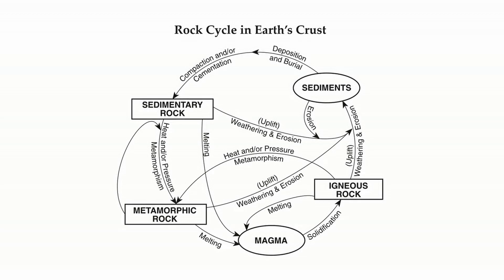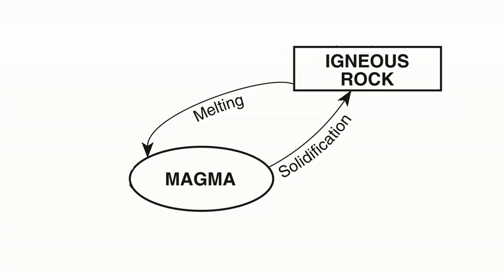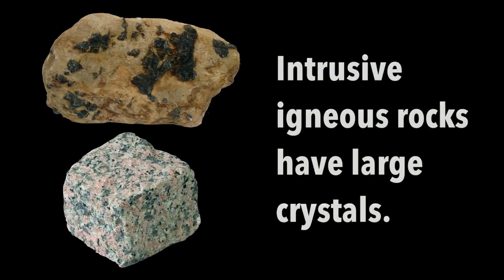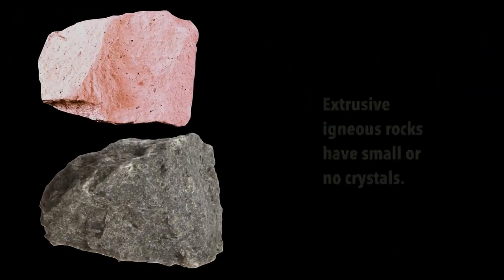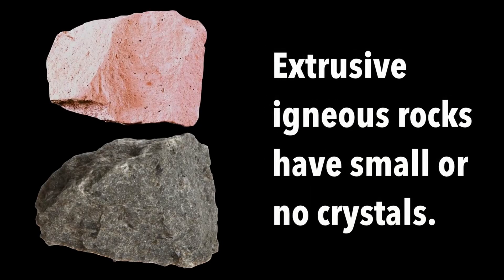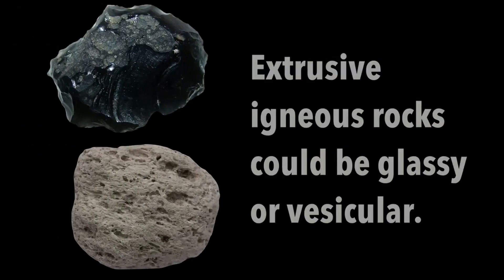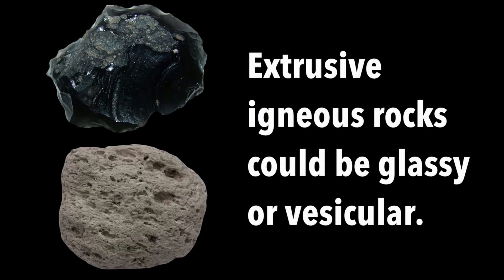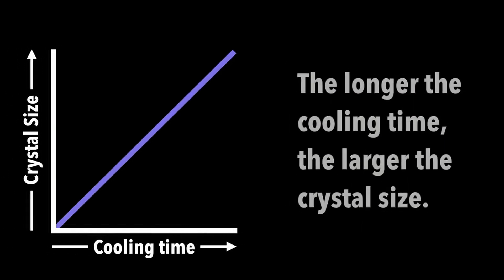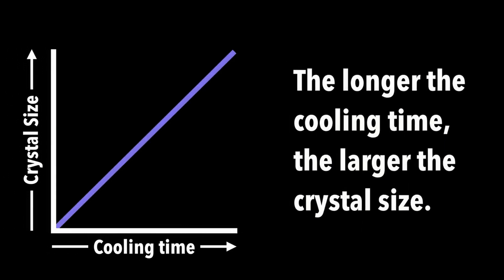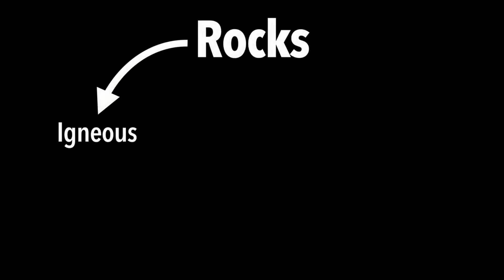There's also the rock cycle chart in the reference table, which shows that igneous rocks form from melting into magma and then solidification. To review: intrusive igneous rocks have large crystals because of slow cooling; extrusive igneous rocks have small or no crystals because of fast cooling. Some extrusive rocks may be glassy and others could have air bubbles, making them vesicular. The longer the cooling time, the greater the crystal size.